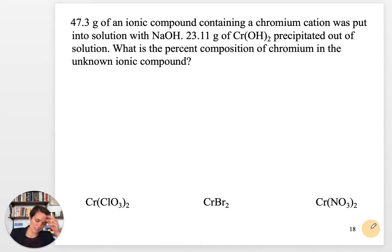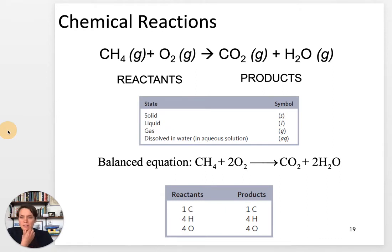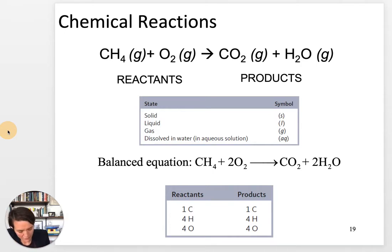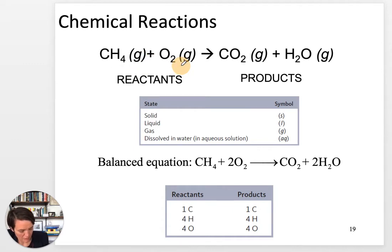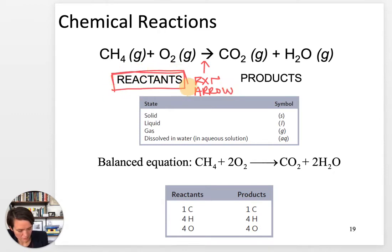Now we're ready to move on to some new material: analyzing chemical reactions. That's what the last part of this chapter and all of chapter four is about. For chemical equations, we have a system for writing them: species are written with plus signs between them on the left-hand side of the reaction arrow — those are called reactants. On the right-hand side, they're called products.